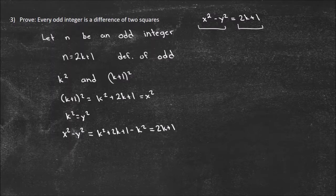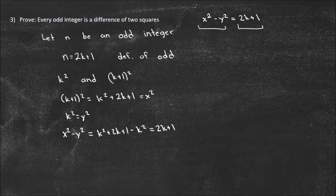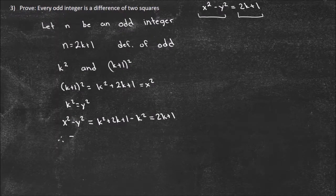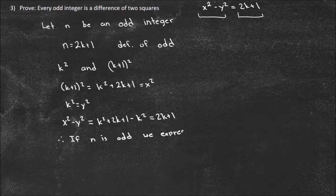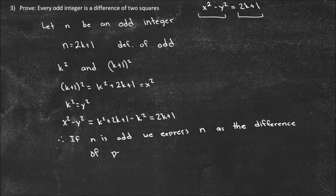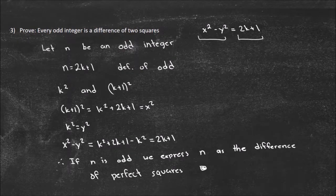I've shown that no matter what n is — n was just an odd integer equal to 2k plus 1 — I can always express it as the difference of perfect squares by letting the first square be (k+1) squared and the second square be k squared. Therefore, if n is odd, we can express n as the difference of perfect squares. Proofs can be tough — you've got to be creative and think about what you're trying to get to.